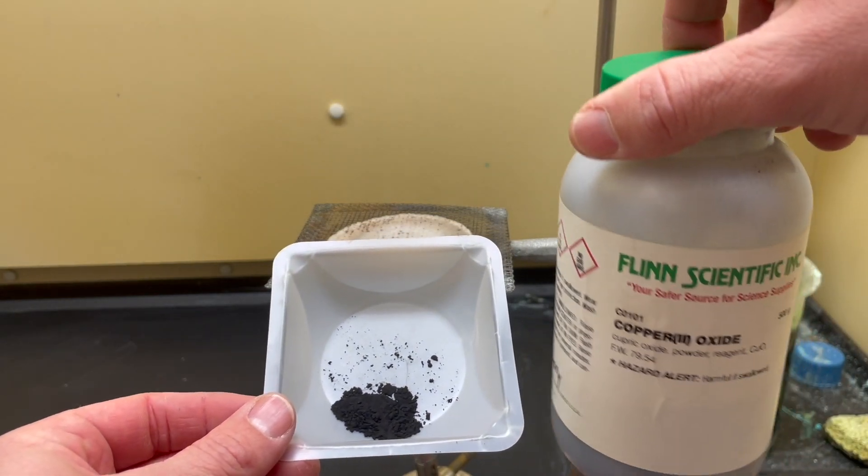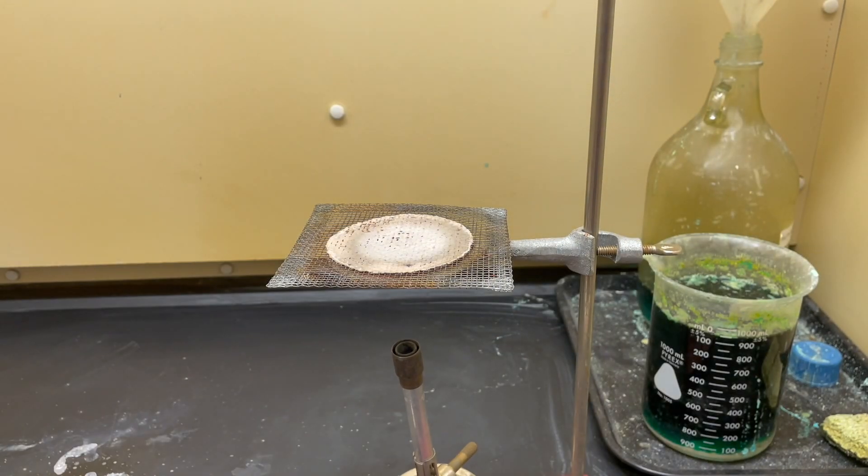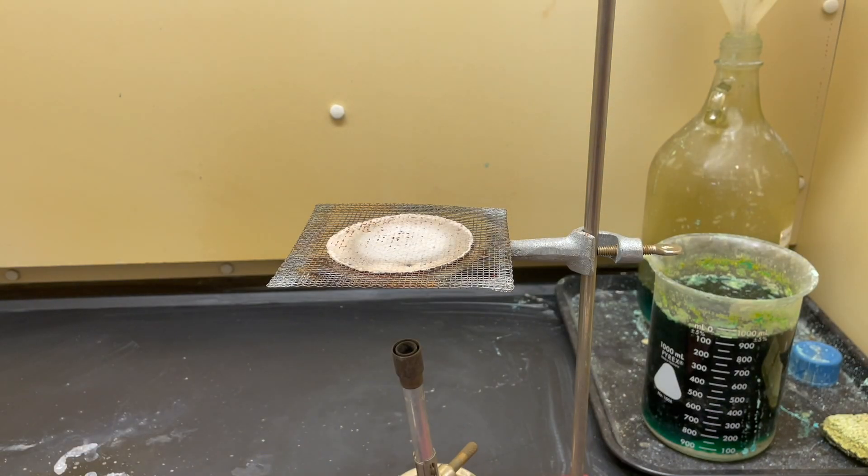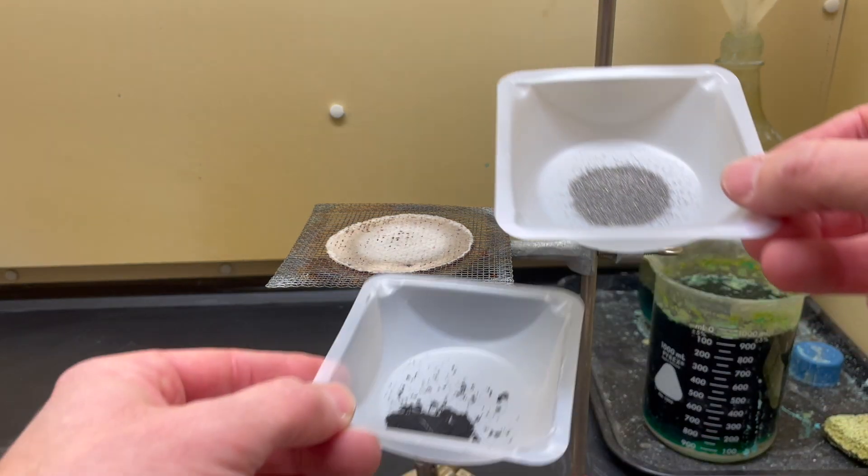Hey everybody, in today's demonstration I'm going to mix together solid copper oxide, which you see here as this dark powder, and I'm going to mix it with solid magnesium metal—little bits of shavings, real small particles.